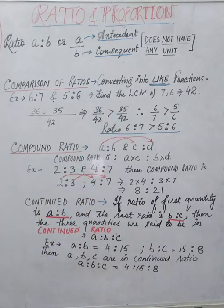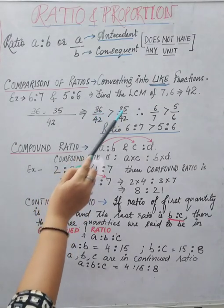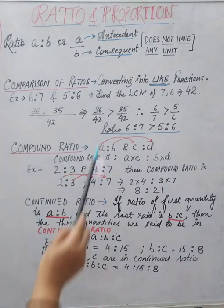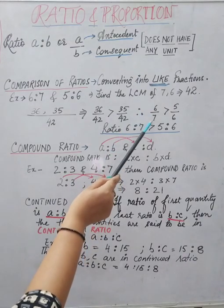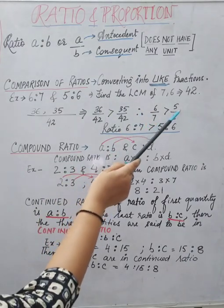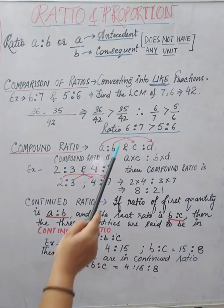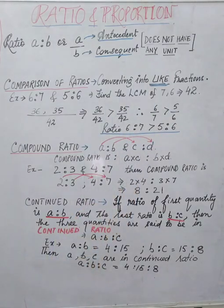Now since the denominators are the same, we only compare the numerators. Since 36 is greater than 35, we conclude that 6:7 is greater than 5:6.